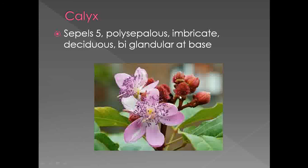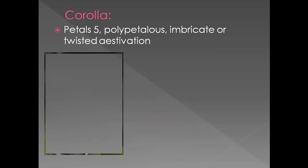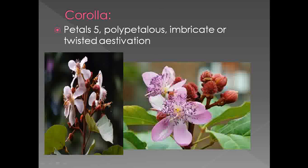The calyx shows presence of biglandular condition — they show presence of glands at the base. About the corolla: the petals are five in number. The petals are free, so they show presence of polypetalous condition. The aestivation is imbricate — one petal is completely inside, one petal is completely outside, and the remaining three are alternate with each other. Some members show presence of twisted aestivation.